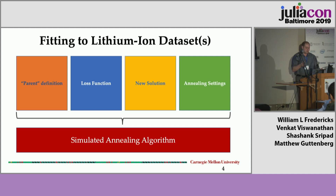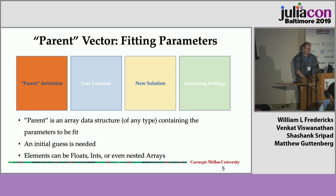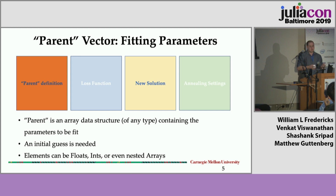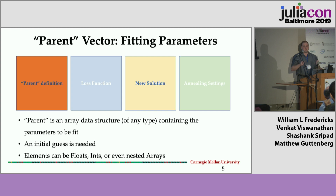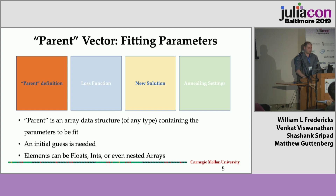Some of you are in your criticizing loss function, new solution, and annealing settings, and that all goes into the annealing Monte Carlo algorithm that we then use to estimate the parameters for our model. For the parent, the parent is where you put all the parameters — whatever is related to that model that you are actually using — and this could really be of any type. This is also where you put that initial guess, and this is where you'll really start out within the parameter search space when the algorithm starts to get going.